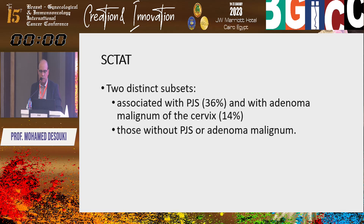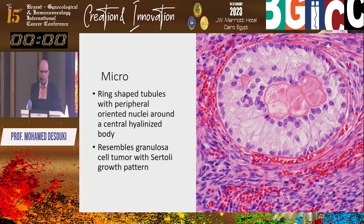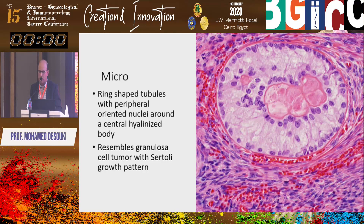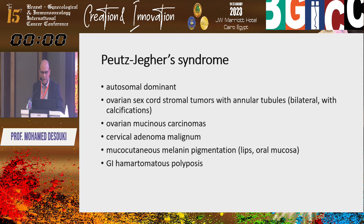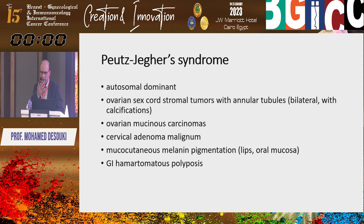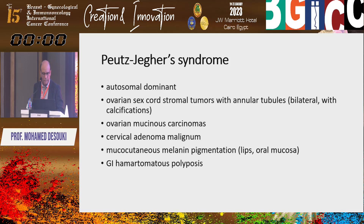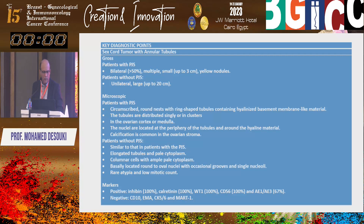The ring structures or tubules show peripherally oriented nuclei around hyalinized material in the lumen, and they resemble granulosa cell tumor with a Sertoli growth pattern. Peutz-Jeghers syndrome is an autosomal dominant syndrome — everyone should know this. It is associated with bilateral ovarian sex cord-stromal tumors with annular tubules with calcifications, cervical adenoma malignum (now gastric-type adenocarcinoma), mucocutaneous melanin pigmentation in the lips and oral mucosa, and GI hamartomatous polyposis. Thank you very much.